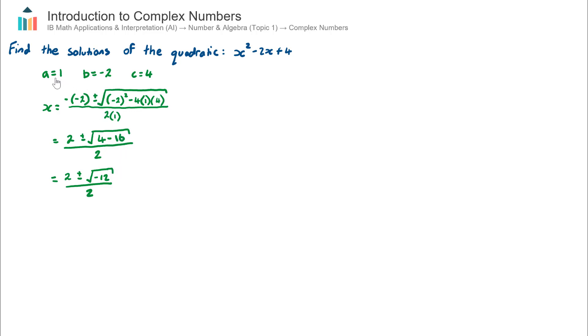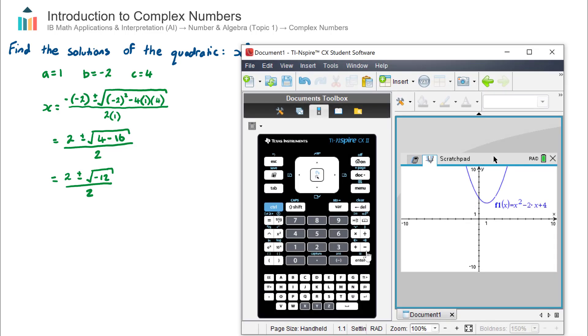So I substituted in my values for a, b, and c, did some working, and I got to this point here and I thought, oh no, I can't proceed any further. I have the square root of a negative number, therefore my quadratic does not have any real solutions. And if I was to visualize the quadratic that is indeed the case - it does not cut through the x-axis, therefore does not have any real solutions.